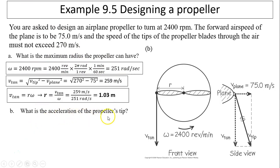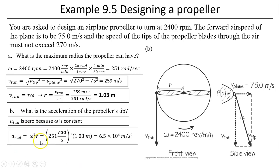Next one, what is the acceleration of the propeller's tip? Remember, acceleration has two parts. It has a_tan plus a_rad. Since V_tan is constant, a_tan has to be zero because omega is constant. So V_tan is constant, right? So a_tan has to be zero. a_rad equals omega squared times R. That gives you 6.5 times 10⁴ meters per second squared.